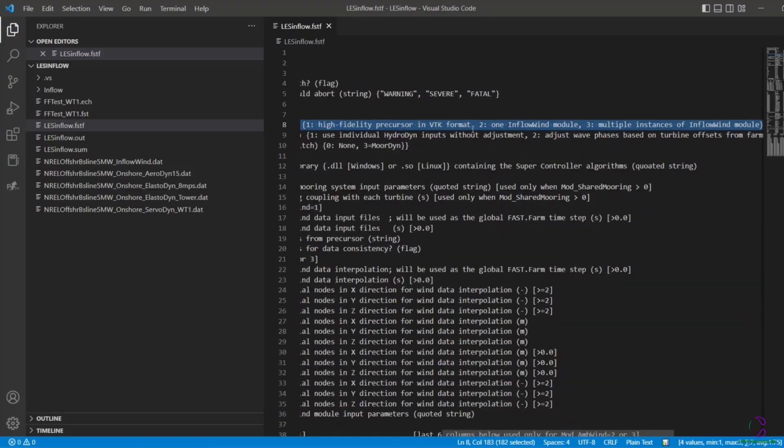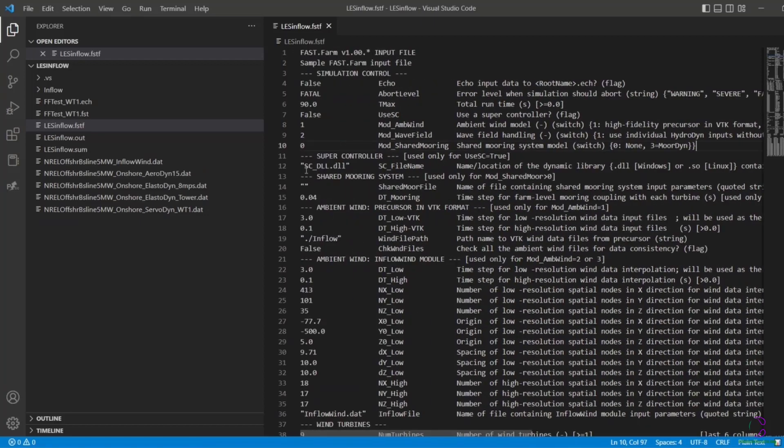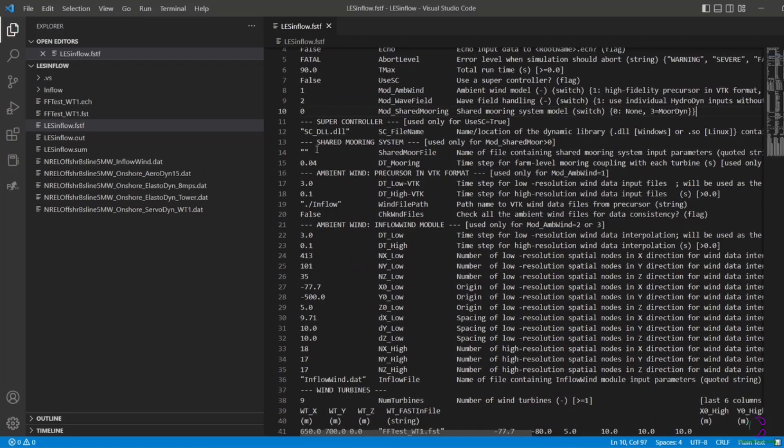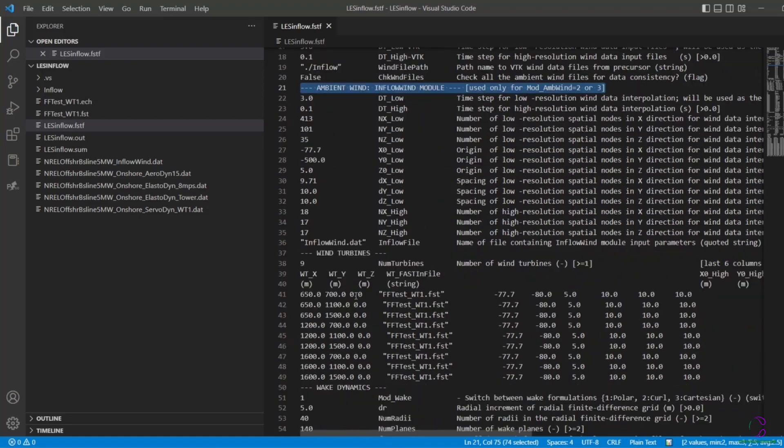So you can see here we are going to change the mode of ambient wind to one, which is going to use the VTK file format. And then you can see how you need to update the number of wind turbines in this section.